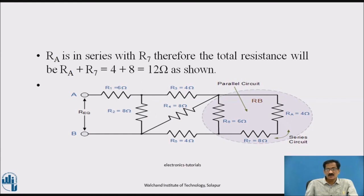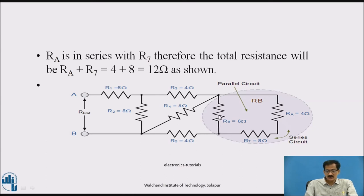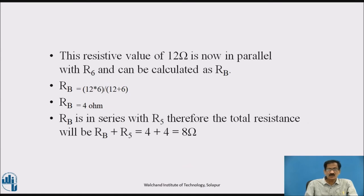Redrawing the circuit, denoting the shaded portion as RB: the 4 ohm comes in series with the 8 ohm resistance, giving 4 plus 8 equals 12 ohm. This 12 ohm now comes in parallel with 6 ohm, so RB equals 12 × 6 divided by 12 plus 6, and RB comes out to be 4 ohm.